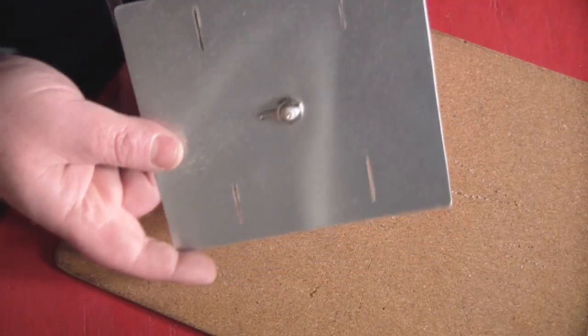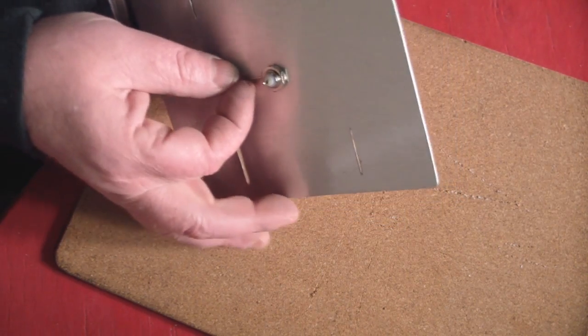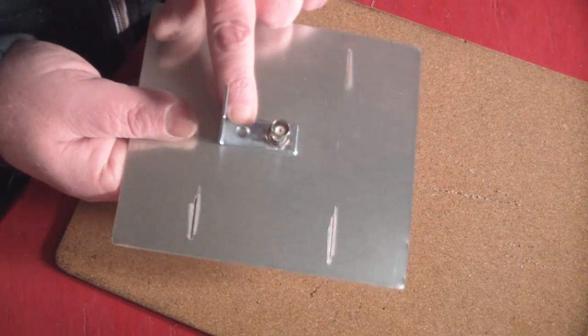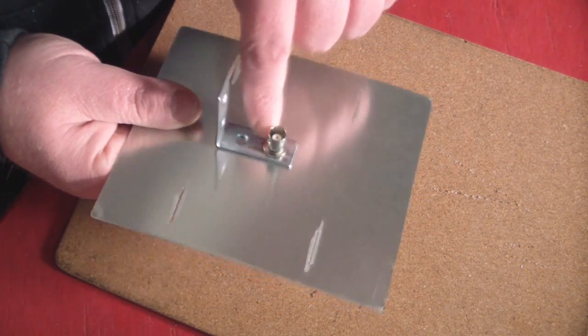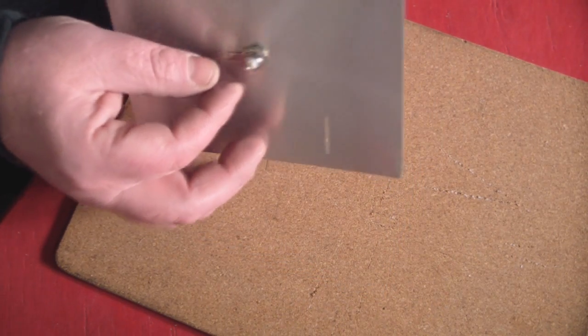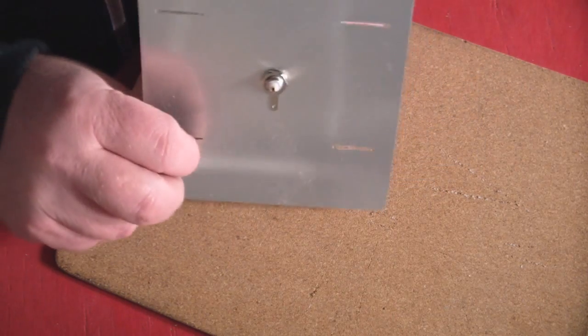So here's the BNC connector fitted to the back reflector. Don't overly tighten this. I can still move that little tag there just slightly. And also the bracket on the back. So the actual BNC connector is holding the bracket and the reflector all with one nut.